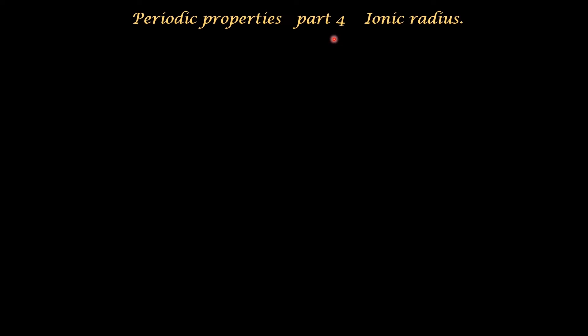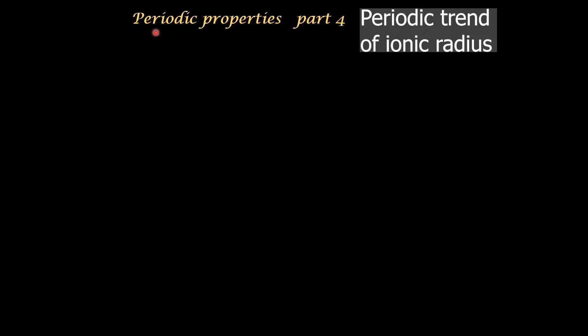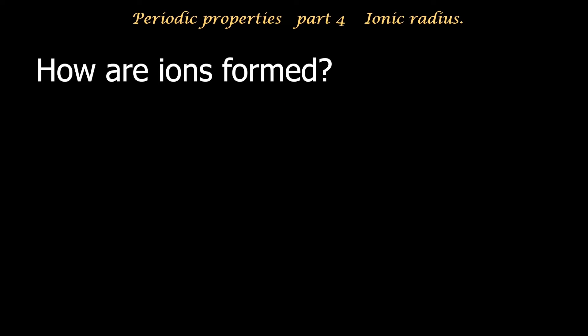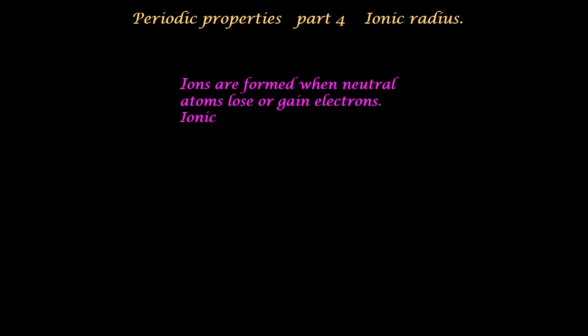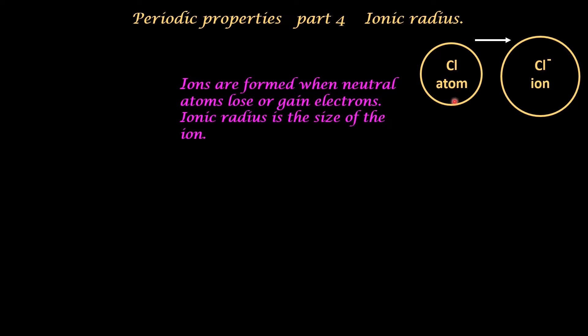Periodic Properties Part 4: ionic radius — that is, the trend of ionic radius. In the previous video we discussed the trend of atomic radius; now we will discuss the periodic trend of ionic radius. You have already learned that ions are formed when a neutral atom loses or gains electrons. The ionic size is represented in terms of ionic radius. In ionic crystals such as sodium chloride, the chlorine atom gains one electron and becomes the chloride ion, which is negatively charged. Negatively charged ions are called anions.